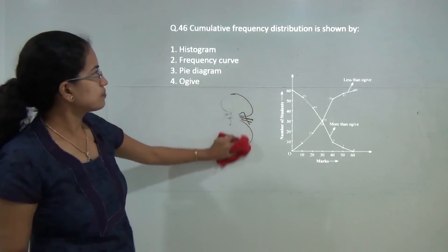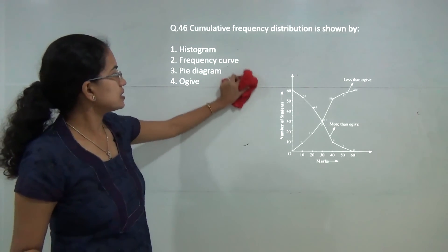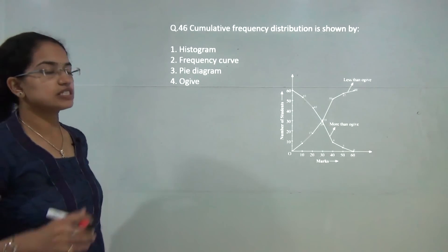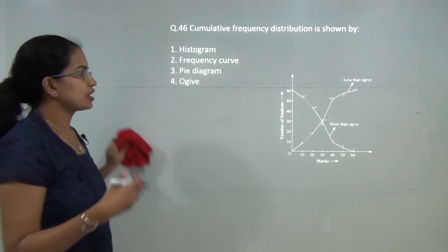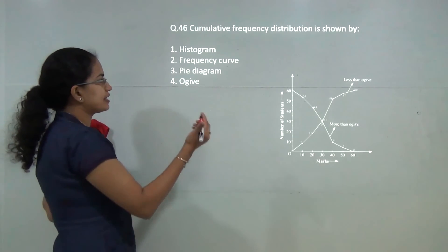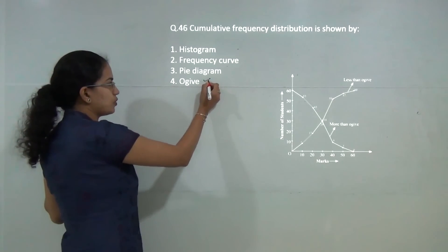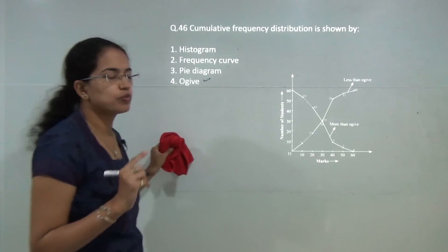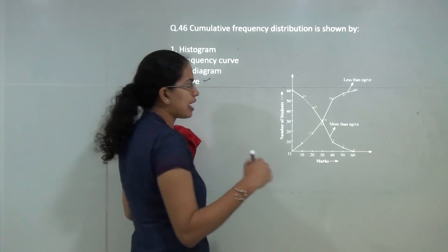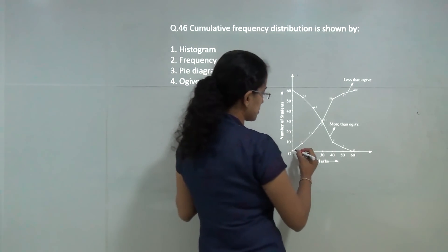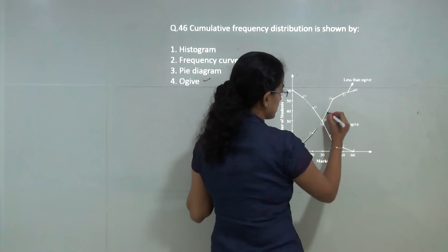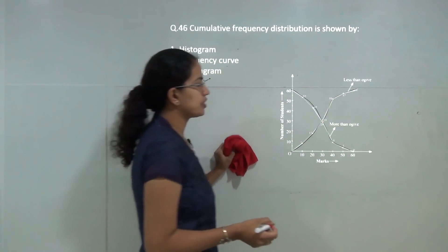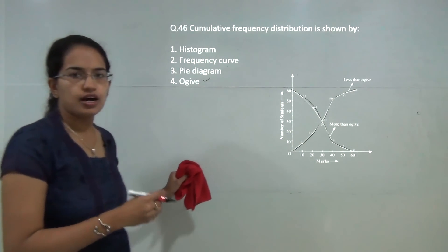The cumulative frequency distribution is known as an ogive. An ogive can be of two types: the more-than ogive and the less-than ogive. We will discuss this more when we cover the topics on statistics.